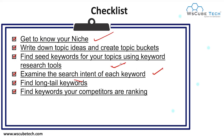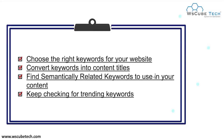For search intent, you can use your keyword research tool, or you can take help from Google suggestions and Google's 'People Also Ask' section. You can also use various tools available. Then you have to figure out some long-tail keywords. Then you have to find keywords where your competitors are ranking, because competitor research is also an important part. After doing competitor research, you have to choose the right keywords for your website. Then convert these keywords into your content titles. You also have to figure out semantically related keywords to use in the content.